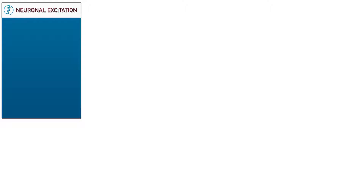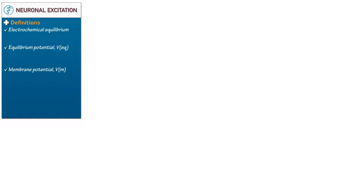Here we'll learn about neuronal excitation. We'll start a table to note the definitions for several key interrelated mediators of cellular physiology: the electrochemical gradient, the equilibrium potential, the membrane potential, and the electrochemical driving force.